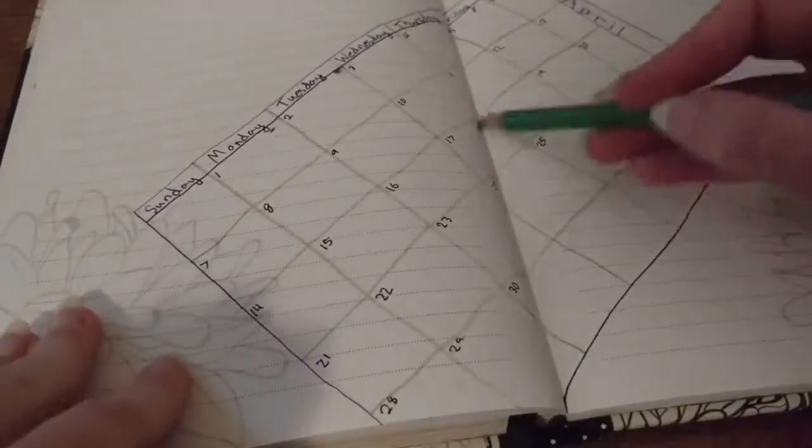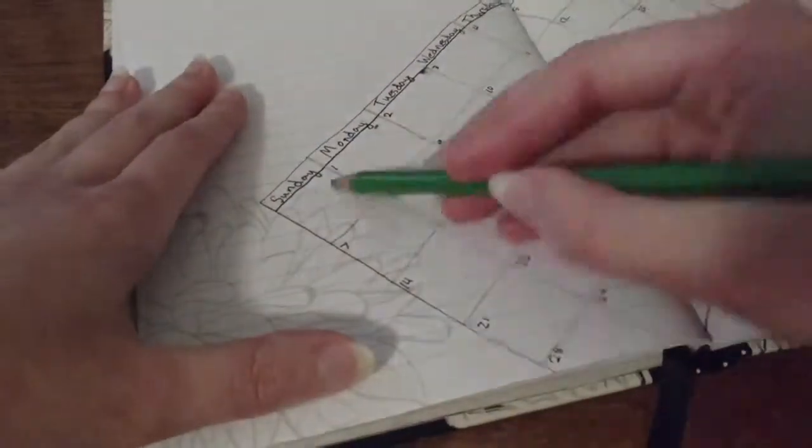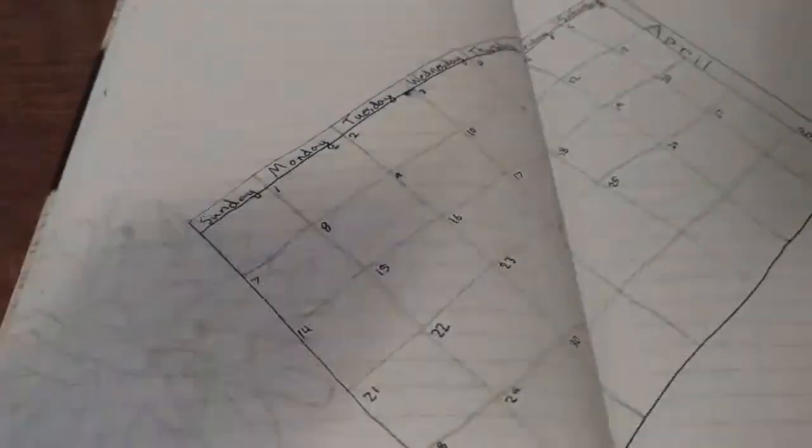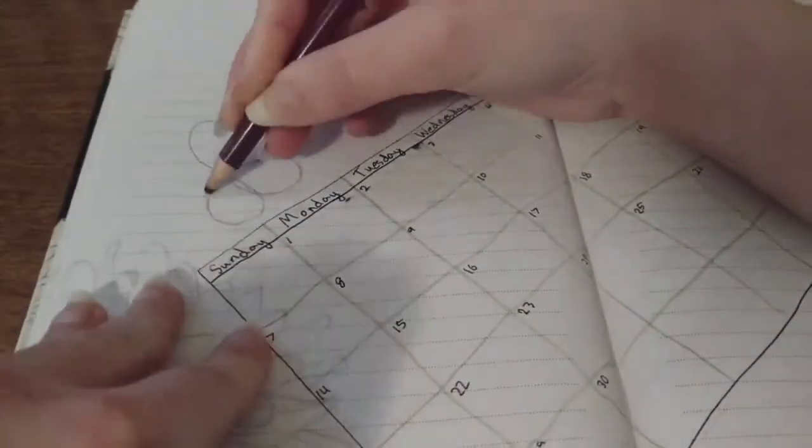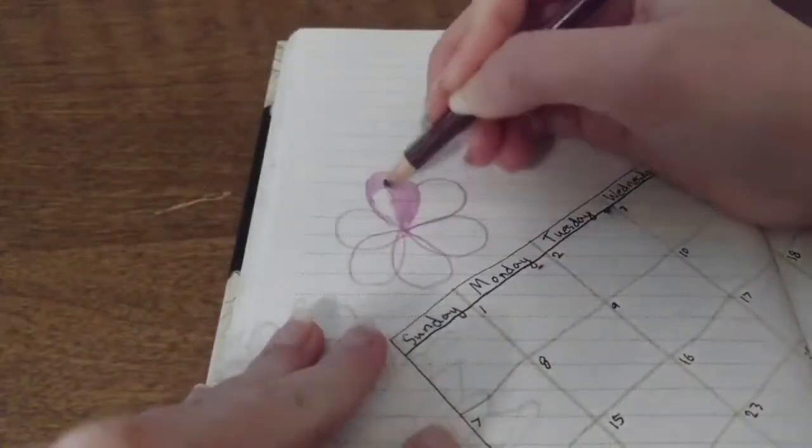And now I'm just going to color in some green. It doesn't exactly look like a list because it doesn't have anything written in it, but it's supposed to represent sort of like a pad of paper.